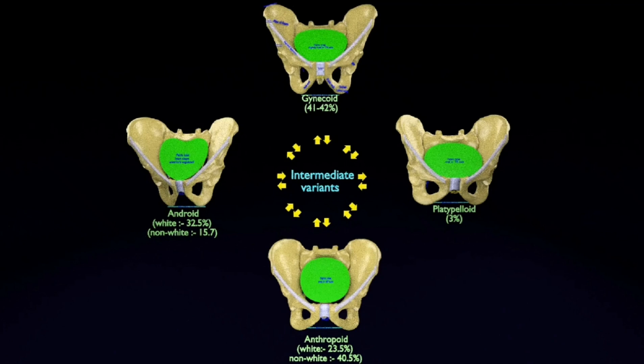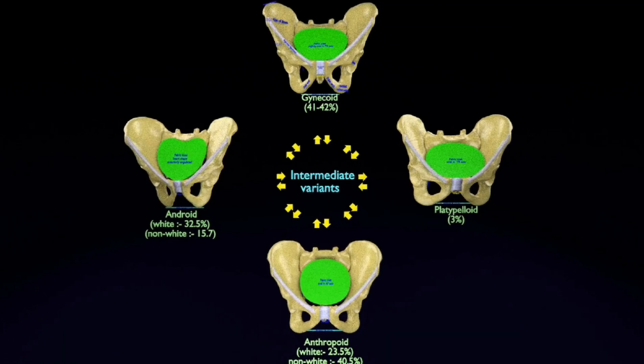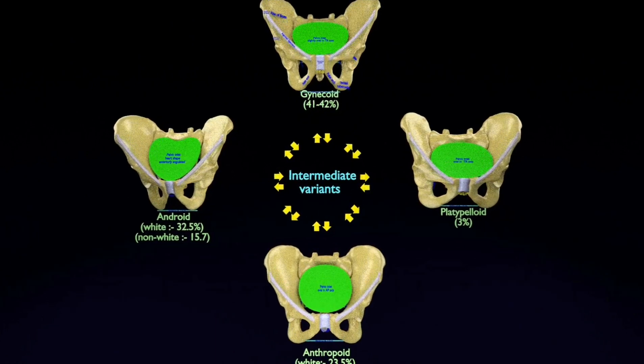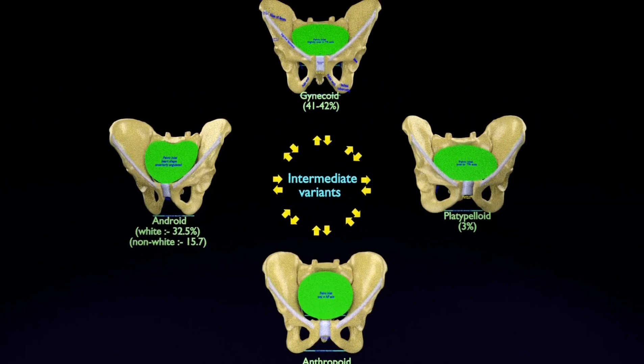Even in females, the pelvis varies in shape and size among different individuals. Generally speaking, there are four main pelvis types according to the Caldwell-Molloy classification. The four different pelvis shapes in order of descending incidence are: Gynecoid, which is present in 40% of the female population; Android, which is 32%; Anthropoid, which is 23%; and Platypelloid, which is 3%. The majority of pelves are of mixed types. The type of pelvis a female has may affect the ease with which she can give birth vaginally.